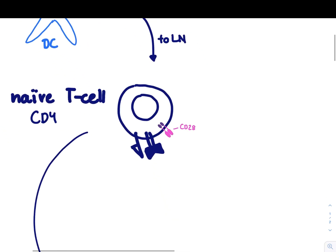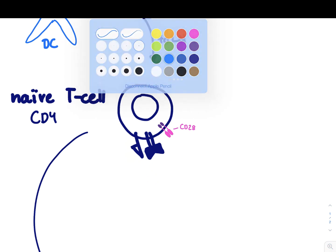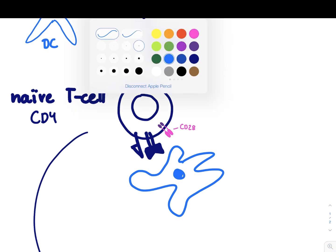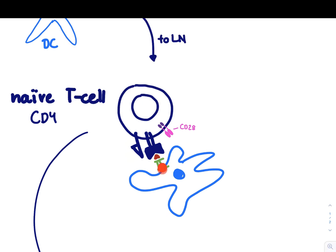Then it could happen that this dendritic cell that now made its way into the lymph node presents this food antigen via MHC class 2. And we're going to get a signal 1 via this activation of the T-cell receptor and the interaction with MHC2. Now this is going to happen all the time. And what is going to happen next?